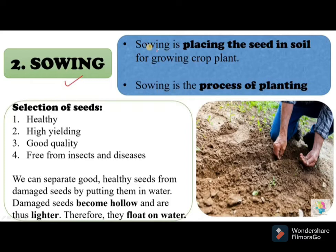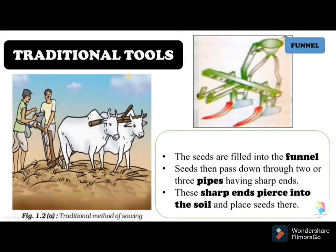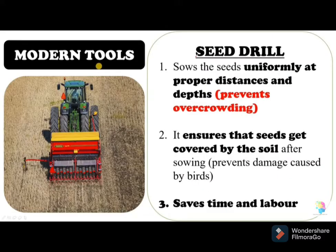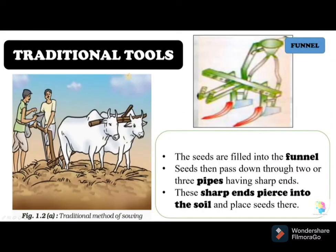Sowing is done by some methods. Before sowing, one important task is to know about the tools used for sowing seeds. There are traditional tools, broadcasting, and seed drill — these three methods are used for sowing.